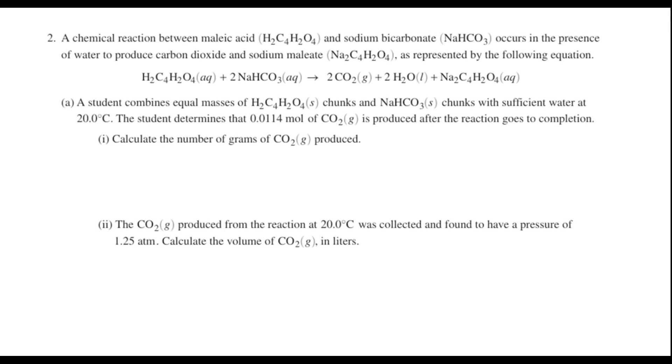Question two is a long FRQ, and in this one we have a chemical reaction between maleic acid and sodium bicarbonate occurring in the presence of water to produce carbon dioxide and sodium hemaleate. Part A says a student combines equal masses of maleic acid chunks and sodium bicarbonate chunks with sufficient water at 20 degrees Celsius. The student determines that 0.0114 moles of CO2 gas is produced after the reaction goes to completion. Part one says calculate the number of grams of CO2 produced. Well, it tells us how many moles we have, 0.0114 moles. All we have to do is convert that to grams. So in our conversion factor, I'm going to put one mole on the bottom, grams on top. And we can consult the periodic table and see that there are 44.01 grams in a mole of carbon dioxide. So we can cancel moles, and when you multiply this out, we find that there are 0.502 grams of carbon dioxide produced.